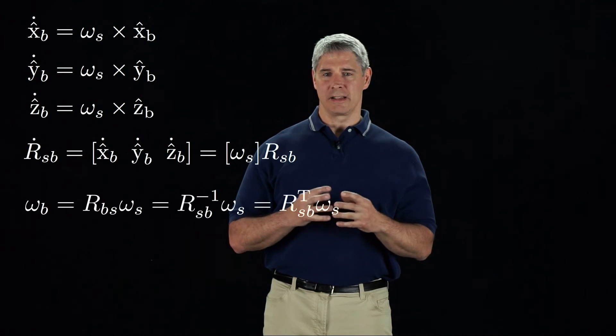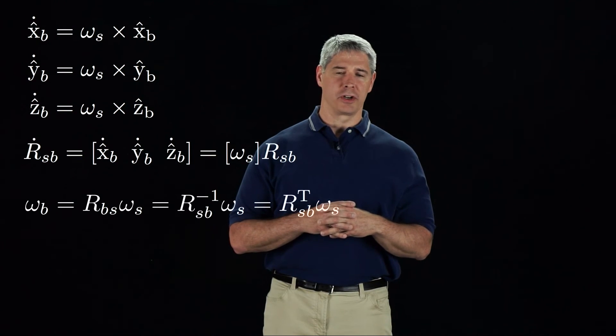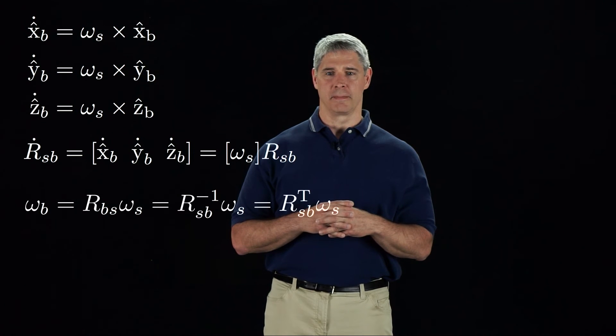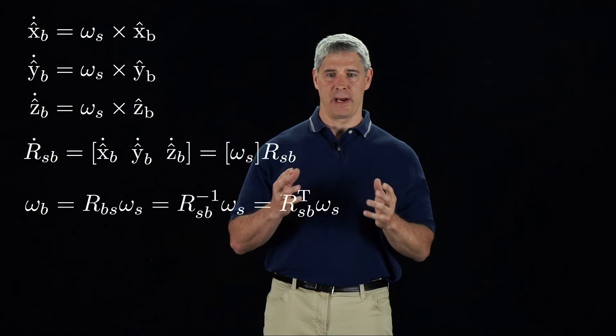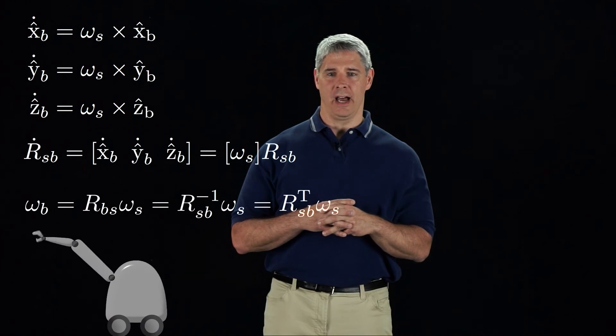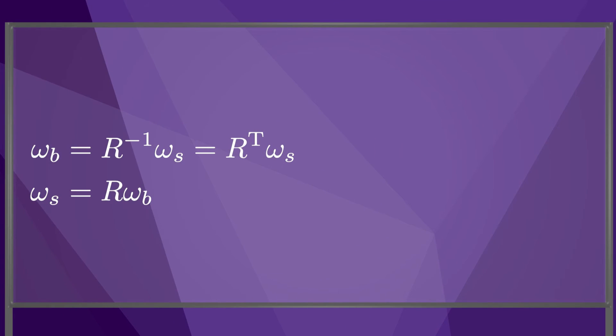R usually indicates the body frame relative to the space frame, so we can drop the subscripts and write the relationship between the body angular velocity and spatial angular velocity as omega B equals R inverse times omega S, and omega S equals R times omega B.